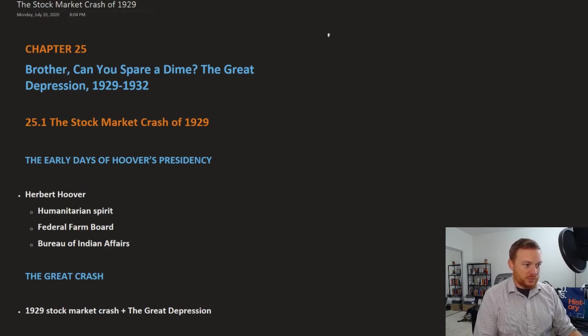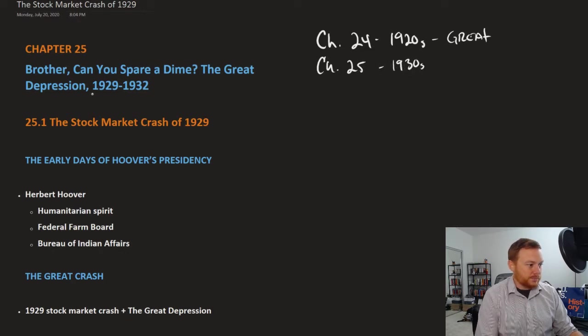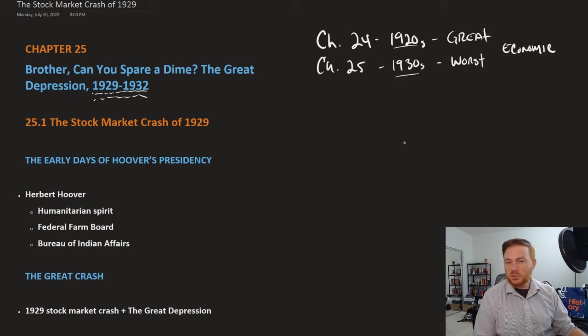Let's recall that last chapter, Chapter 24, talked about the 1920s, and that was generally speaking an economically great time period, a lot of economic prosperity. Here in Chapter 25, we'll be looking at the 1930s, or at least just the early years of the 1930s, which is really in some cases the worst economic time period. So you have a very stark contrast between the 20s and the 30s, just within a very small period of time, going from a very economically prosperous period to a very economically depressed period.